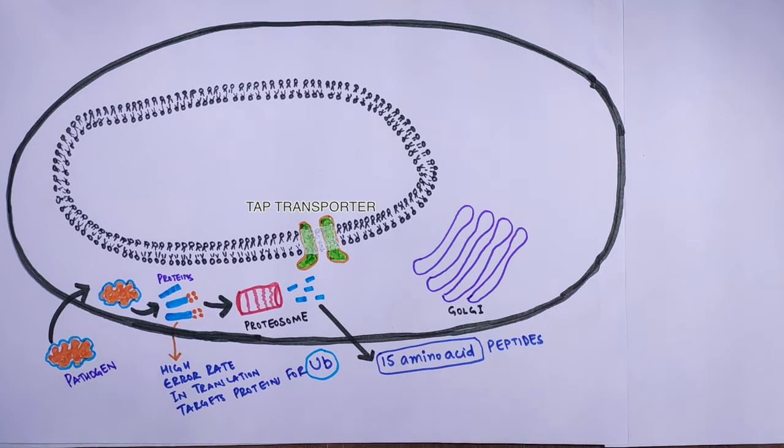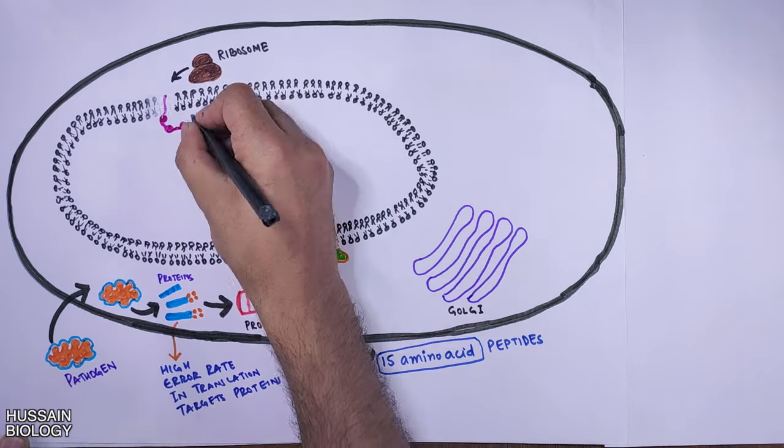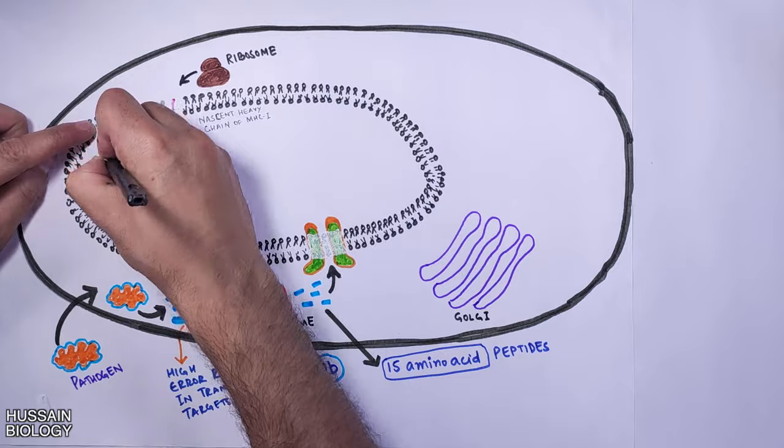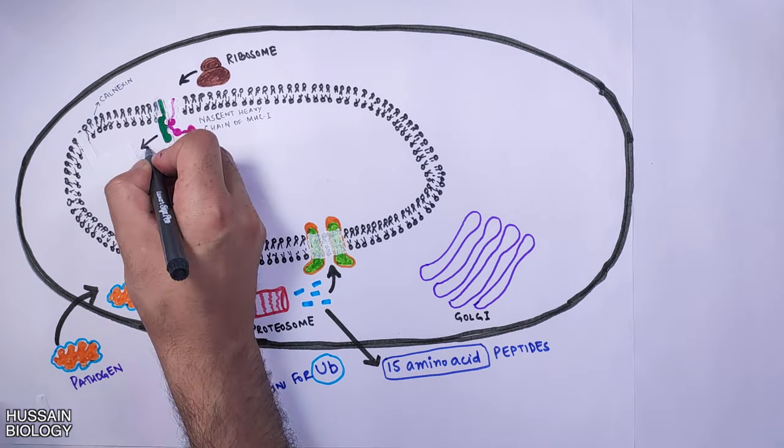Now looking at the other side of the story, which includes the MHC processing: the ribosome on the endoplasmic reticulum makes nascent MHC heavy chain. Then comes in the calnexin protein, which binds with the nascent MHC heavy chain, thus stabilizing the structure.